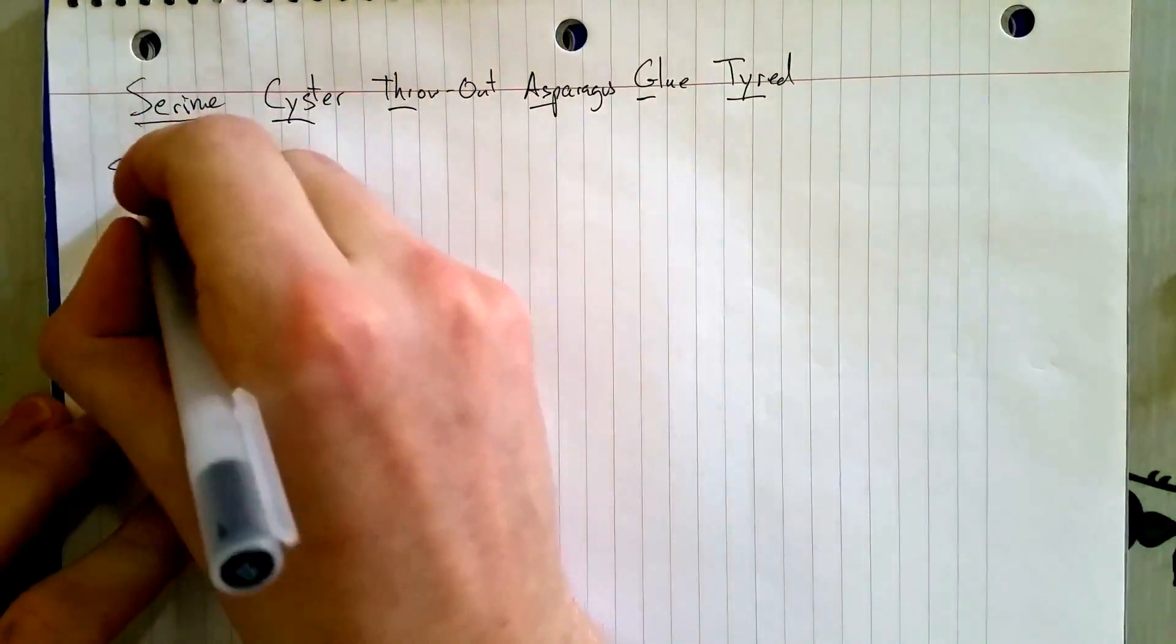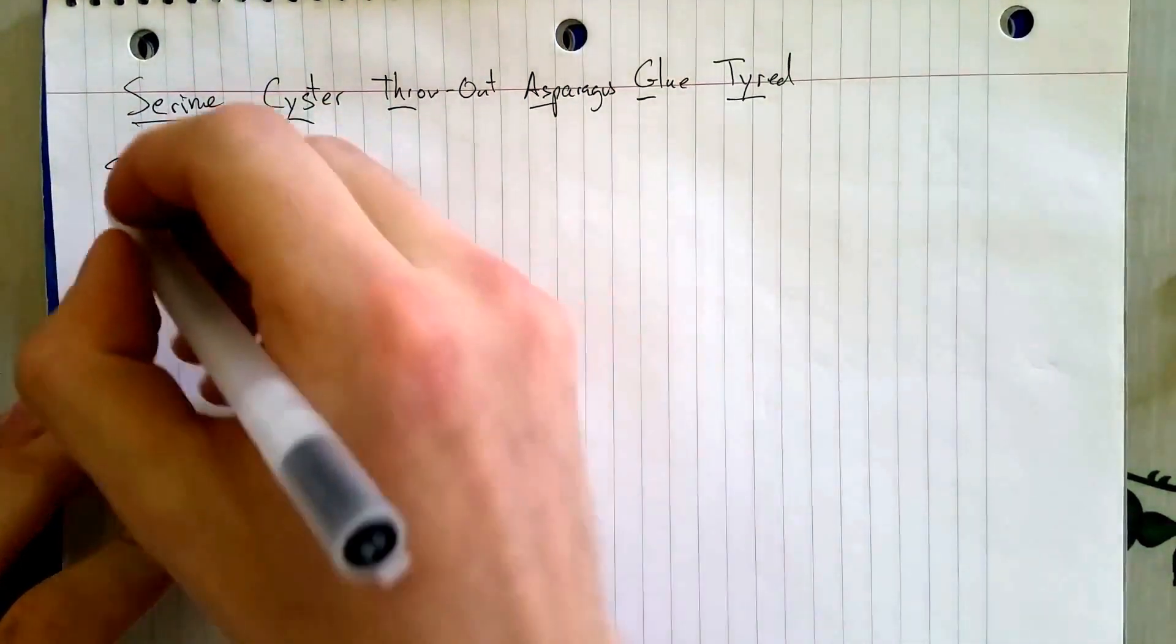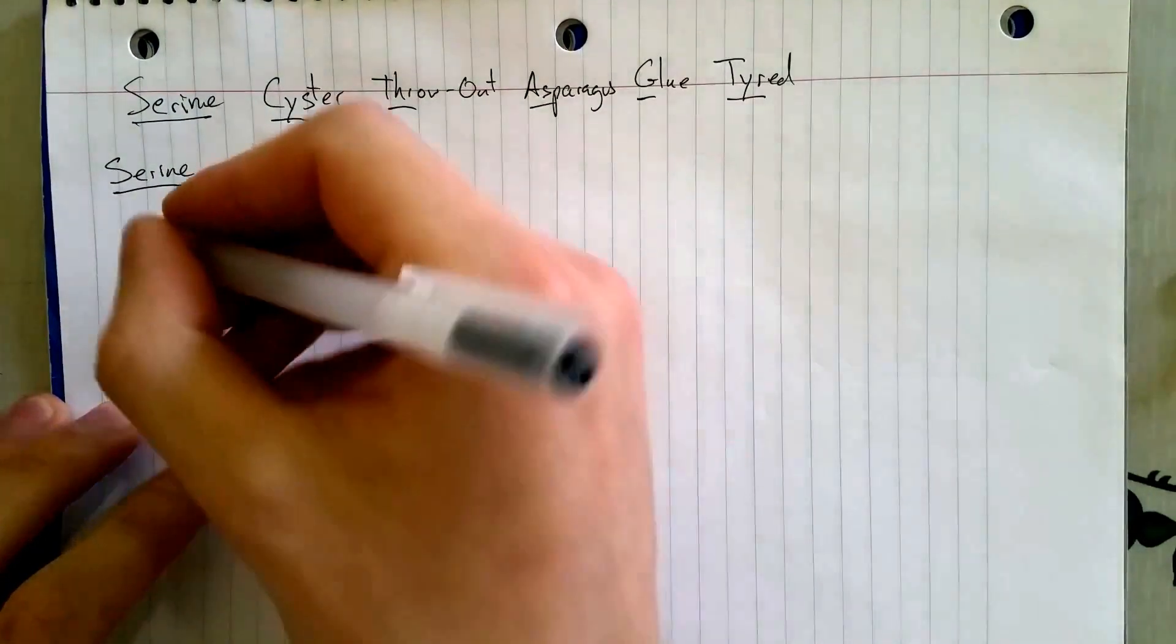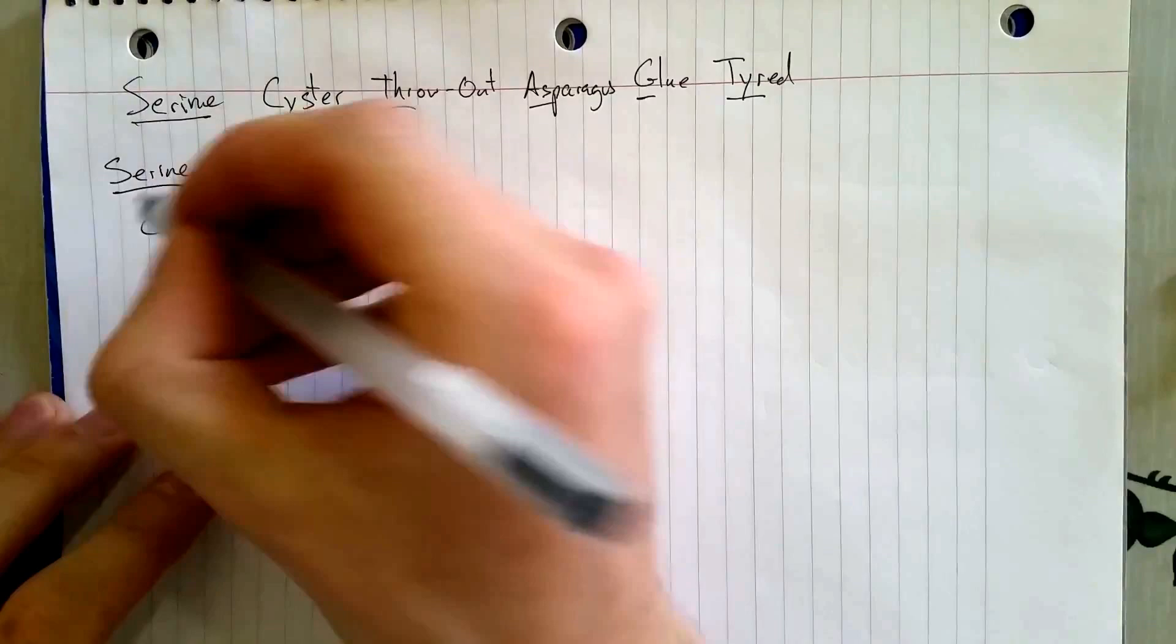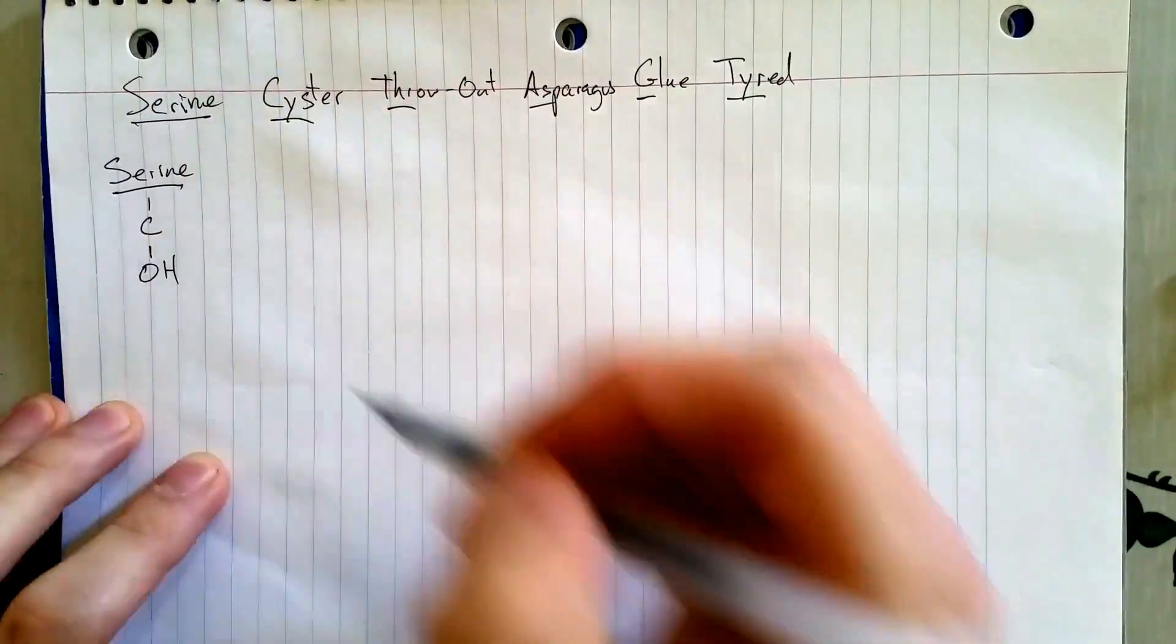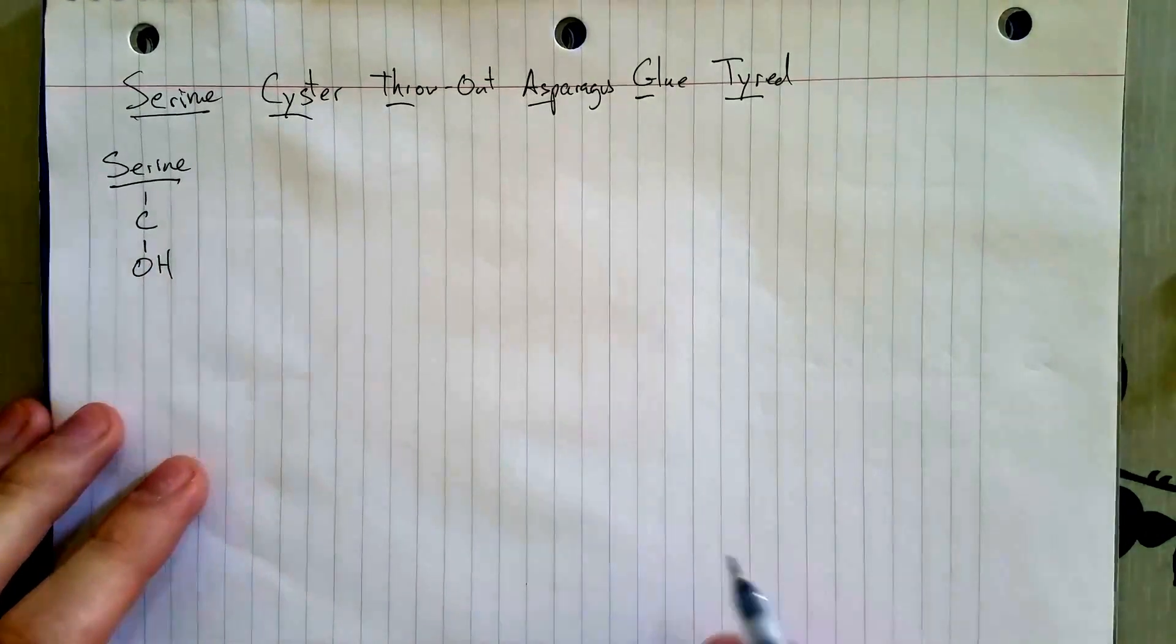So, Serene is the simplest hydrophilic amino acid. Just got your beta carbon here and then OH. Nice oxygen to make it polar, very electronegative.